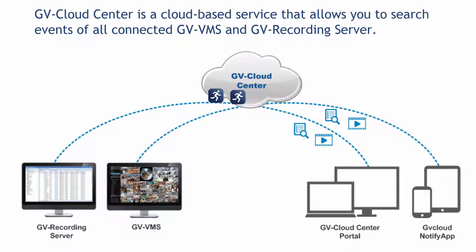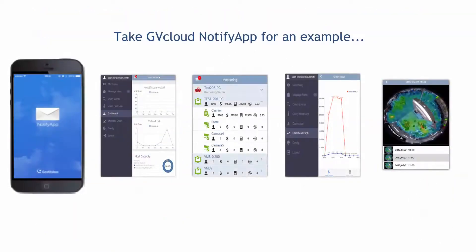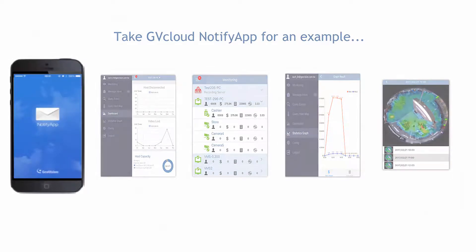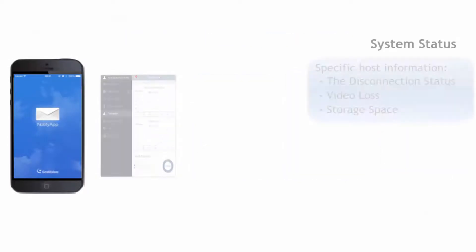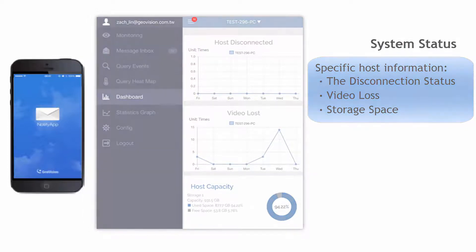Using the Notify app on a smartphone, you can even watch live view and receive notifications at the occurrence of an event. After logging on, you can see specific host information including disconnection status, video loss, and store space.